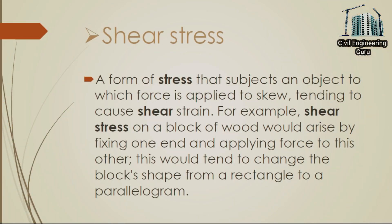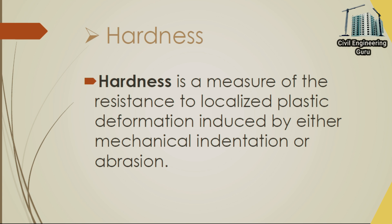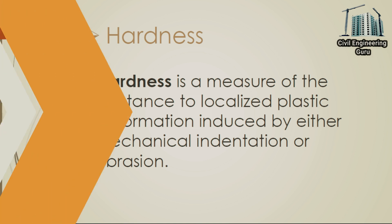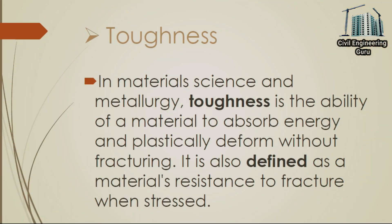Shear stress is a form of stress that subjects an object to which force is applied to skew, tending to cause shear strain. For example, shear stress on a block of wood would arise by fixing one end and applying force to the other — this would tend to change the block's shape from a rectangle to a parallelogram. Hardness is a measure of the resistance to localized plastic deformation induced by either mechanical indentation or abrasion. Toughness is the ability of a material to absorb energy and plastically deform without fracturing; it is also defined as a material's resistance to fracture when stressed.